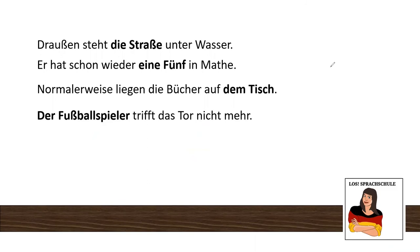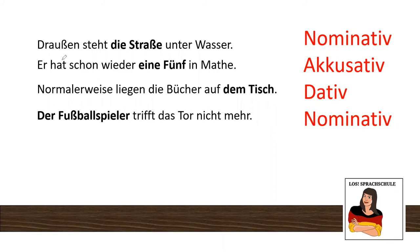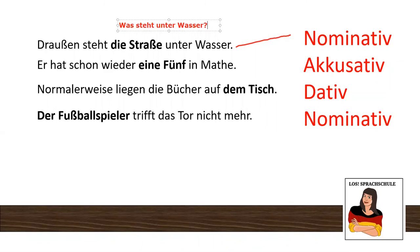A little exercise if you want — please try to find the cases in these sentences. Okay, let's check it out together. 'Draußen steht die Straße unter Wasser' — outside the street is underwater, or flooded. What is the best way to ask? Of course it is nominative because we ask 'was steht unter Wasser?' — what is underwater? We cannot say 'wen' or 'wem'. This is the topic of the sentence. It is nominative.